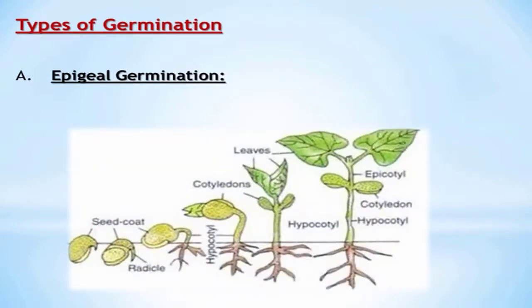Types of germination: we have two types — epigeal germination and hypogeal germination. In epigeal germination, when the seed is planted, the cotyledon is brought above the soil level. Most seeds involved in this kind of germination are dicots — that is, dicotyledonous plants undergo this type of germination.